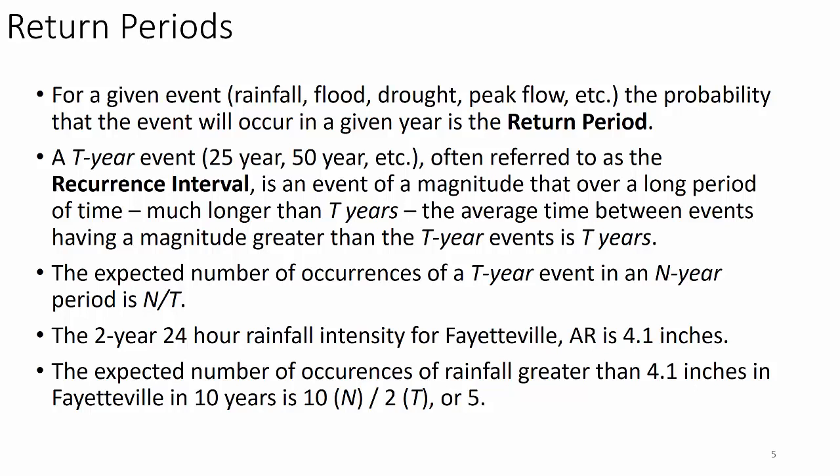The expected number of occurrences of a T-year event in an N-year period is N over T. For example, a two-year 24-hour rainfall intensity for Fayetteville, Arkansas is 4.1 inches. The expected number of occurrences of rainfall greater than 4.1 inches in Fayetteville in 10 years is 10 over 2, or 5.